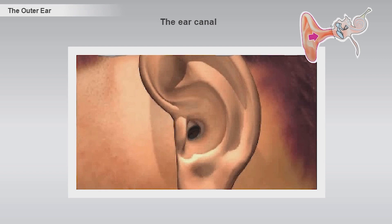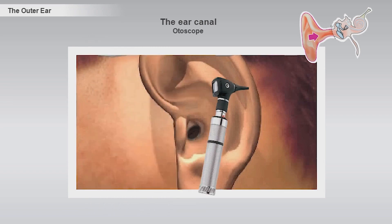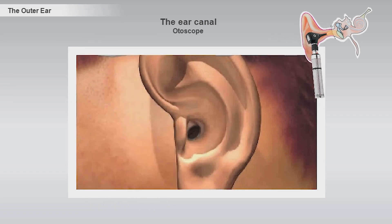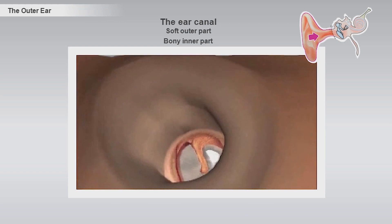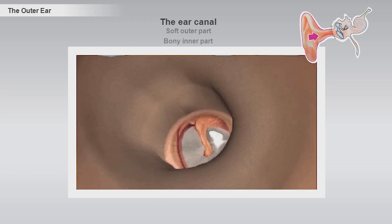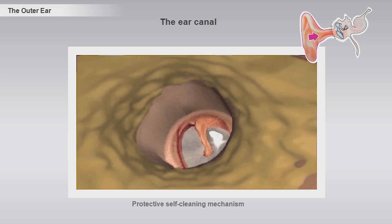However, using a small tool called an otoscope, it is possible to inspect the ear. This examination is called an otoscopy. The ear canal consists of a softer outer part and becomes bony further in as the tube-shaped cavity continues into the temporal bone. The skin of the outer part of the ear canal contains a number of wax-producing glands which function as a protective self-cleaning mechanism.